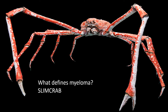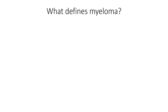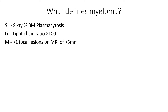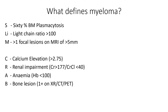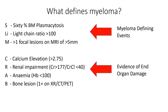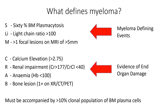So how do we define myeloma? Many of you will have heard of the CRAB criteria, and these have been updated to something called SLIM CRAB. SLIM stands for: 60% of cells in the bone marrow being plasmacytes; light chain ratio more than 100; and more than one focal bone lesion on MRI of five millimeters or more. CRAB covers calcium elevation, renal impairment, anemia, and bone lesions. SLIM describes myeloma-defining events, while CRAB describes end organ damage. These criteria should be accompanied by a greater than 10% clonal population of bone marrow plasma cells, requiring analysis to prove they are the same clone.